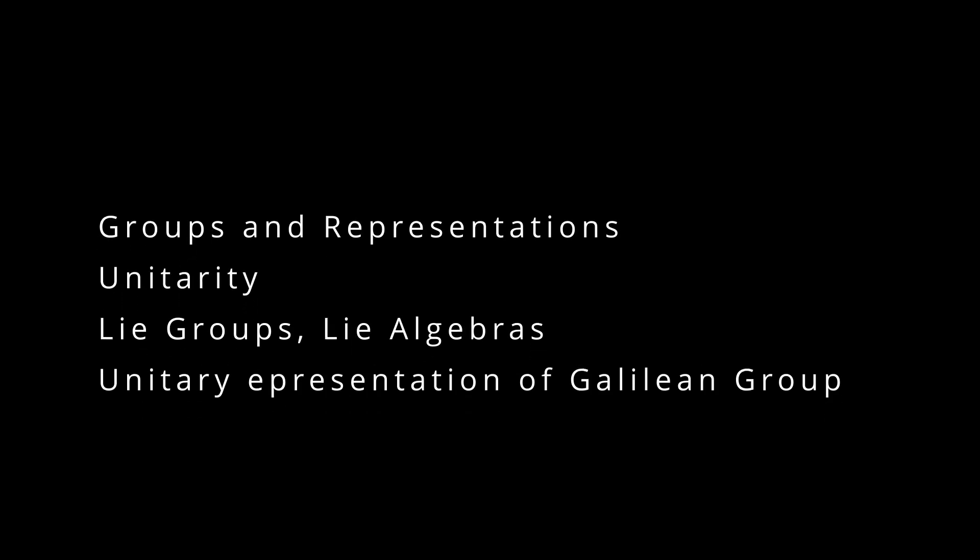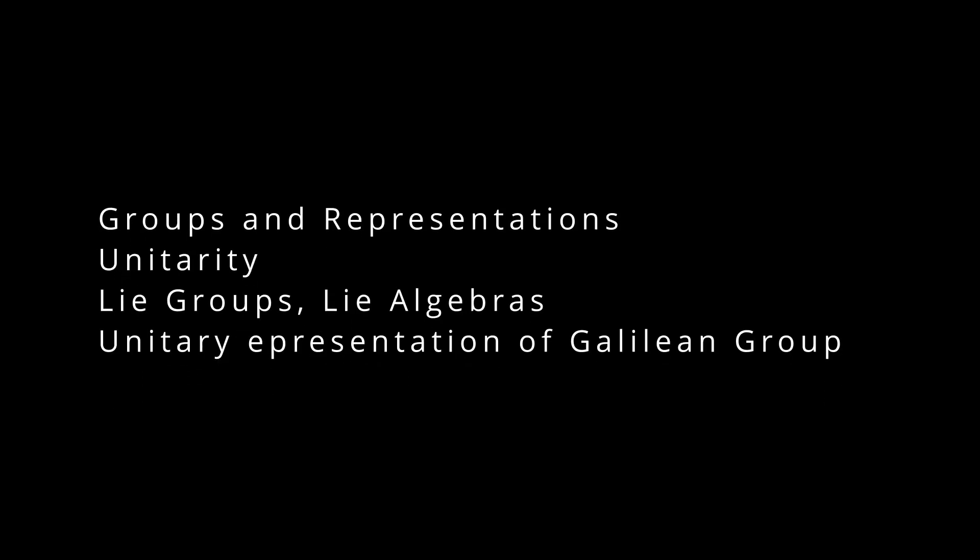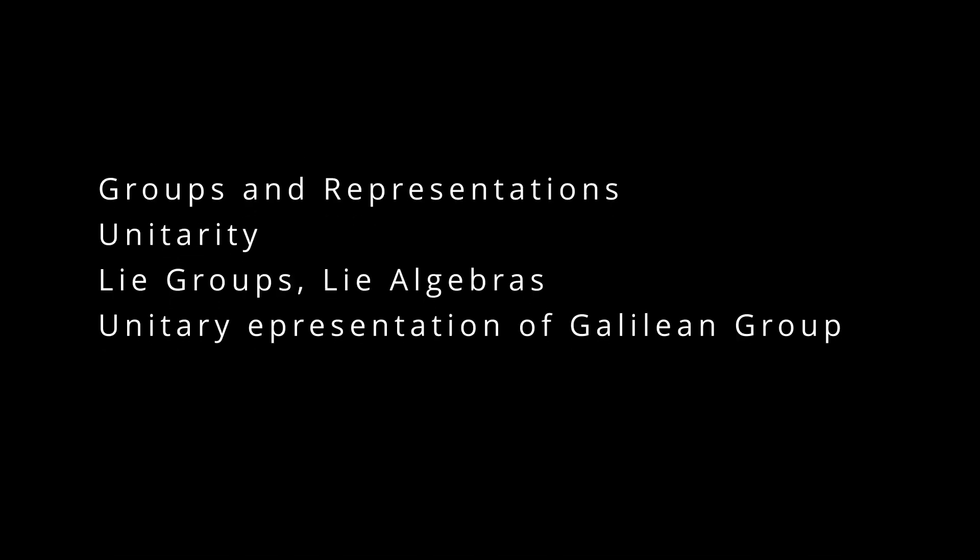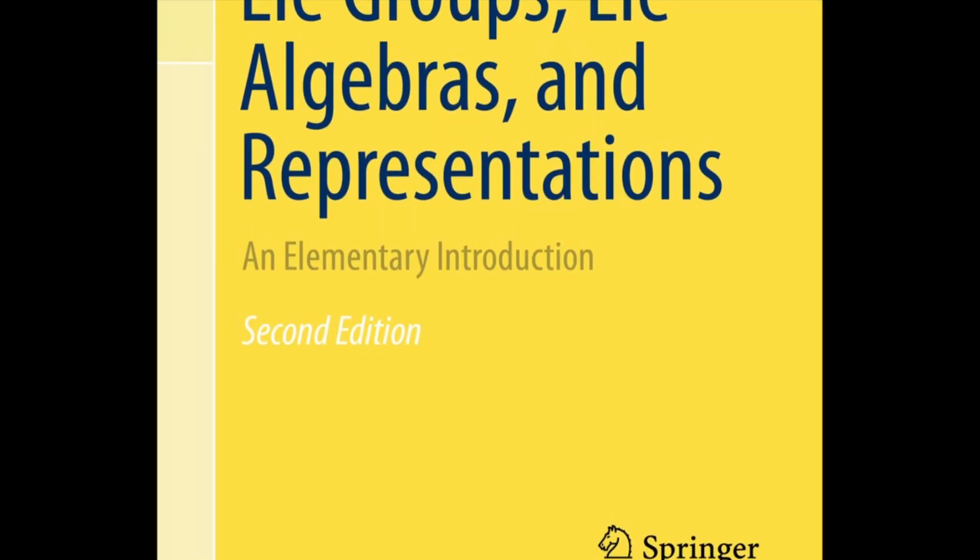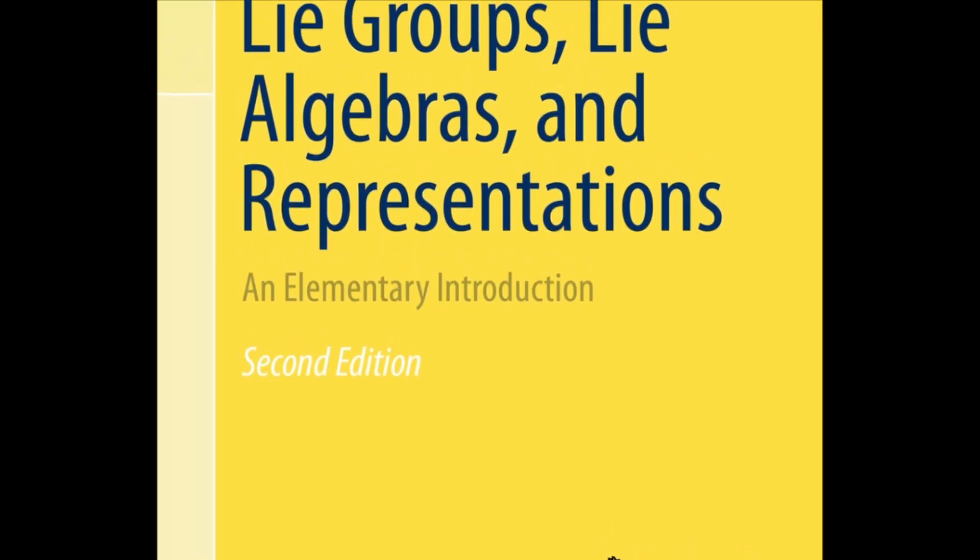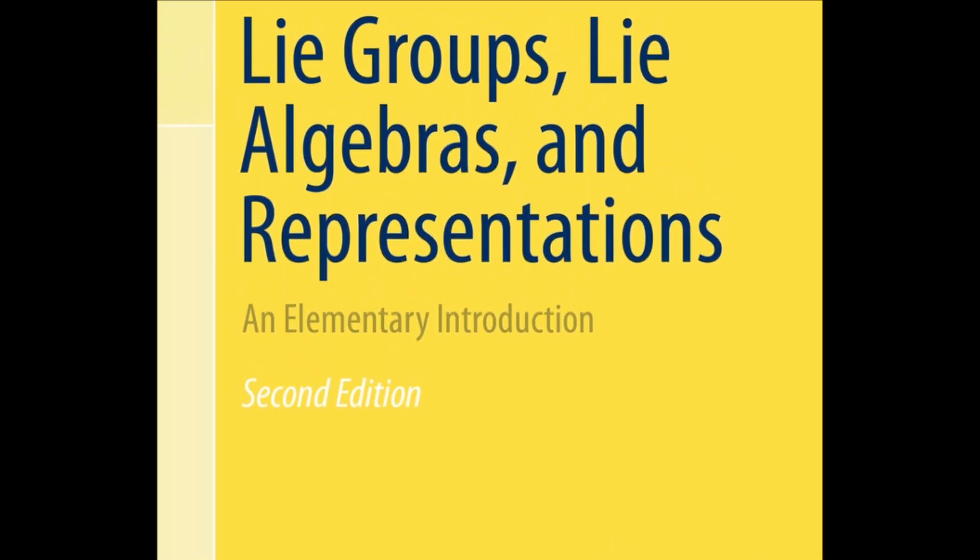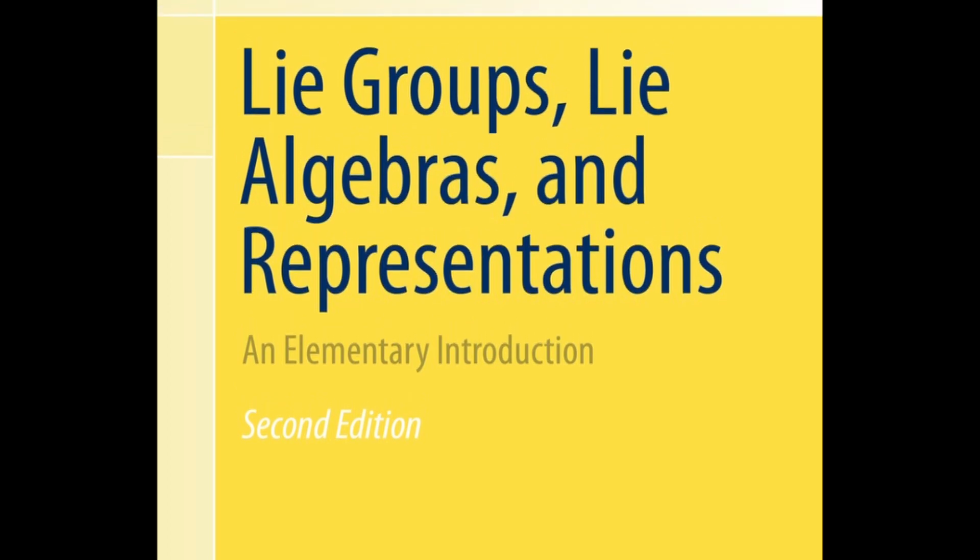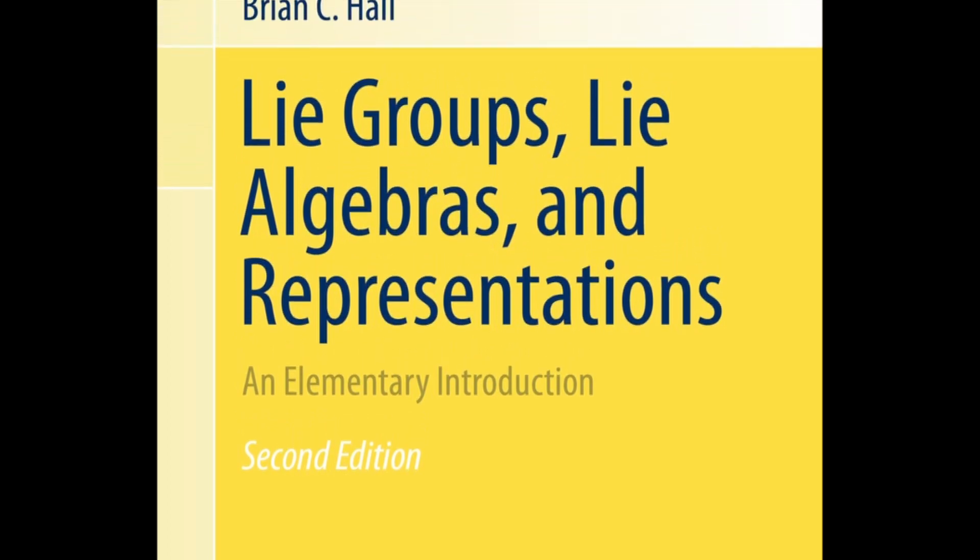Lie algebras and unitary transformations are the most important thing. So unitarity, the concept of unitarity, is the heart of quantum mechanics. This is the most important thing that you need to learn in quantum mechanics: unitarity. And you would learn how to construct the projective unitary representation of Galilean group. And for this course, you would need some knowledge of group theory or groups and representations.